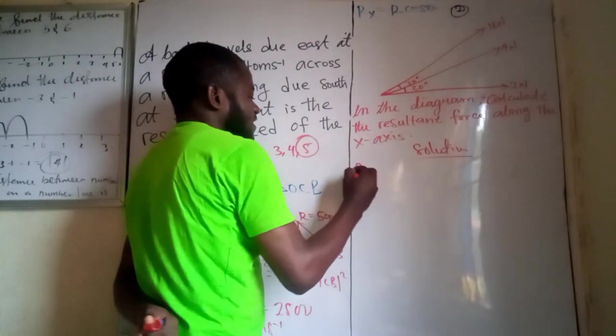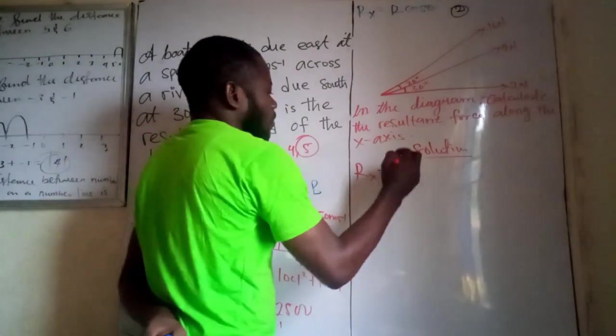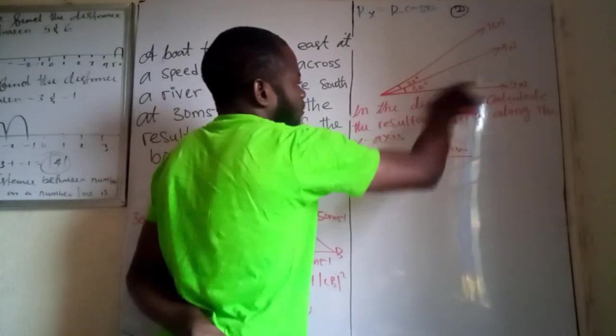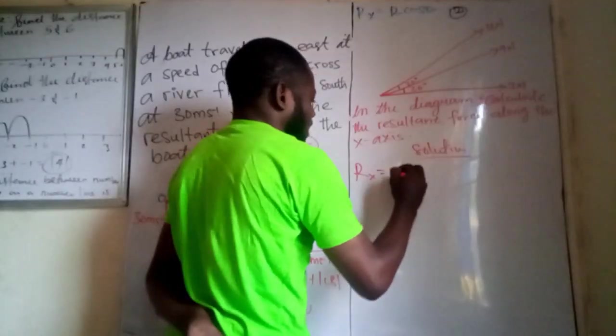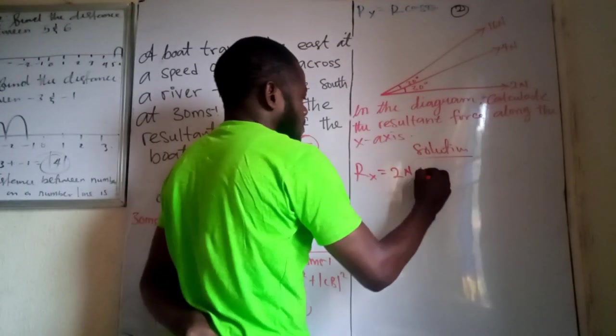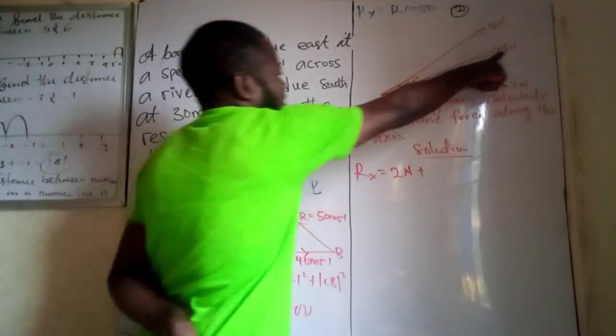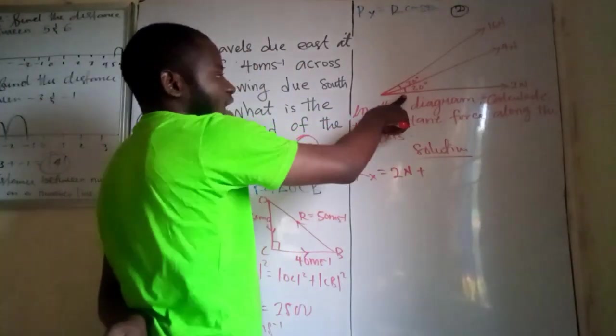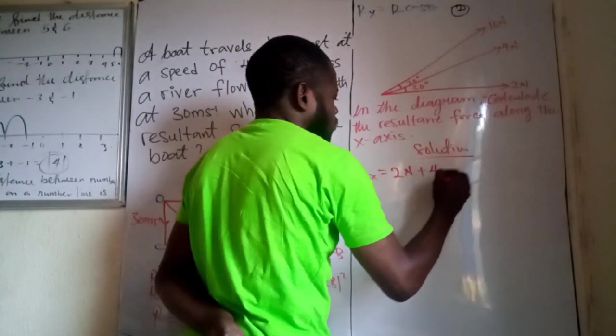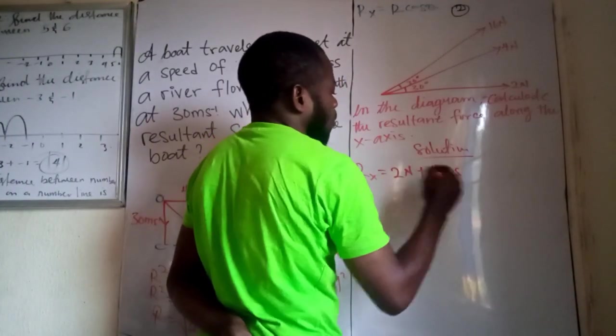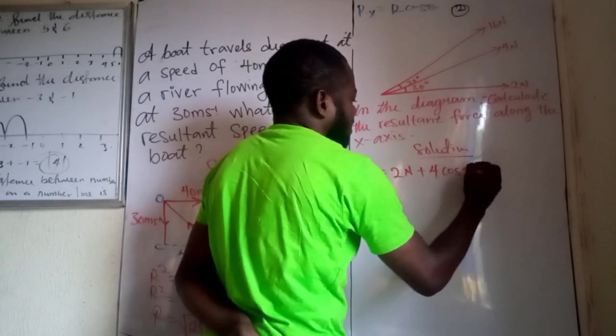The resultant force along the horizontal component of the second question here. So, let's say it is Rx. Now, 2 newton is already an horizontal force. So, we have it on ground. 2 newton plus this is 4 newton here. And it's making an angle of 30 degrees with the horizontal. So, we have this to be 4 cos 30 degrees.